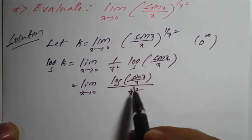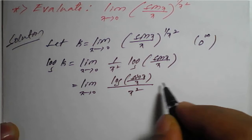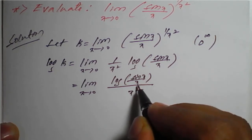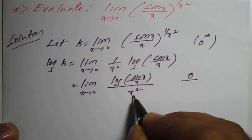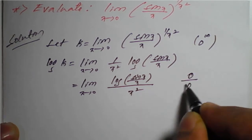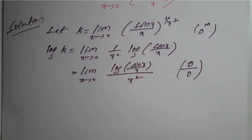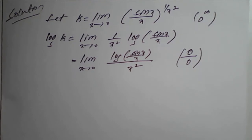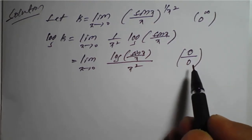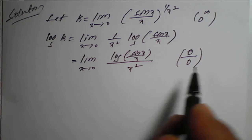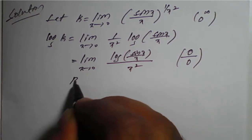We will write this in the form of a fraction. Since sin of 0 is 0, log of 0 is 0, and x square at 0 is 0, we can observe it is 0 by 0 form — which is an indeterminate form. So from this we can apply L'Hôpital's rule.